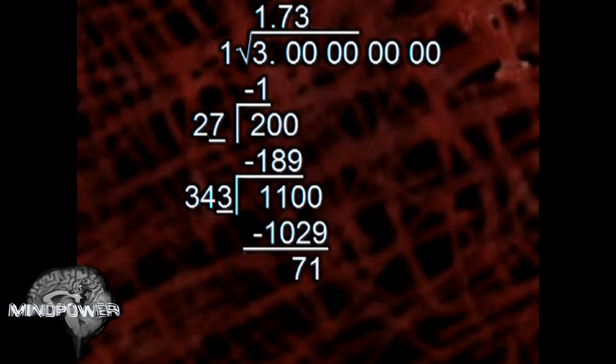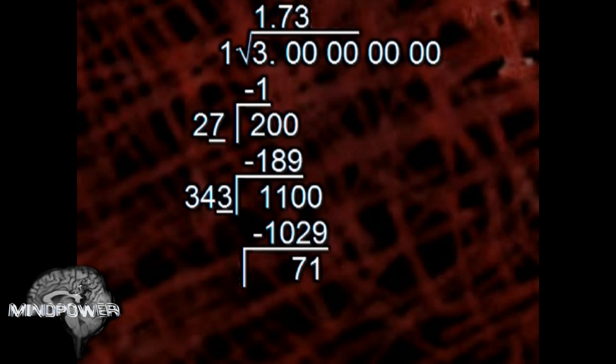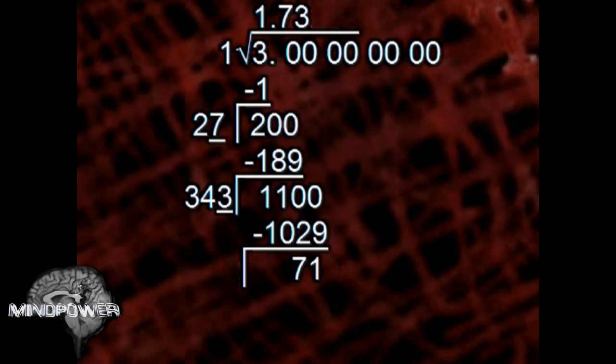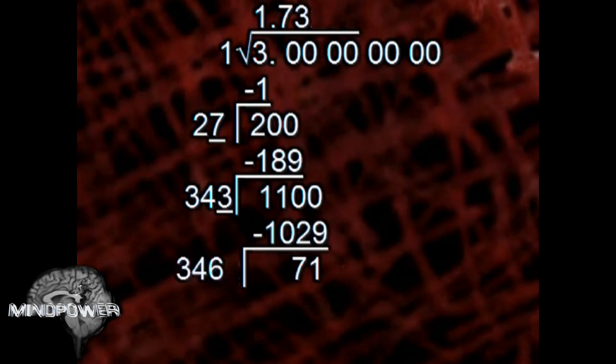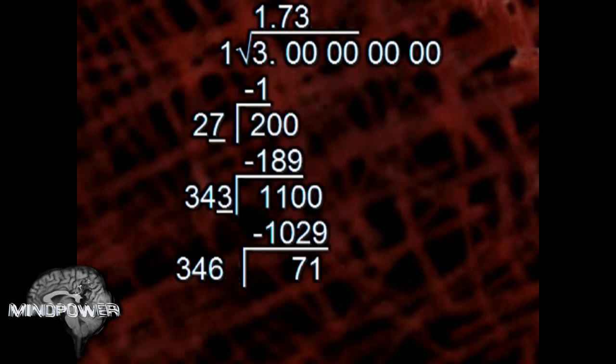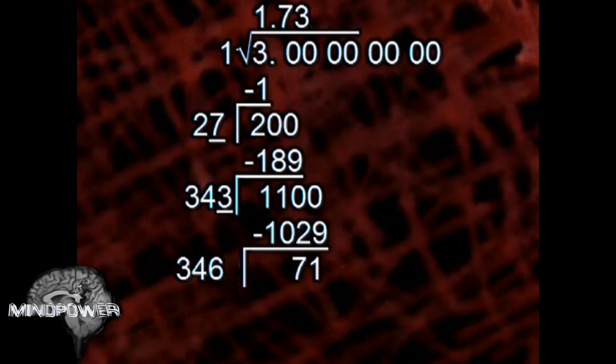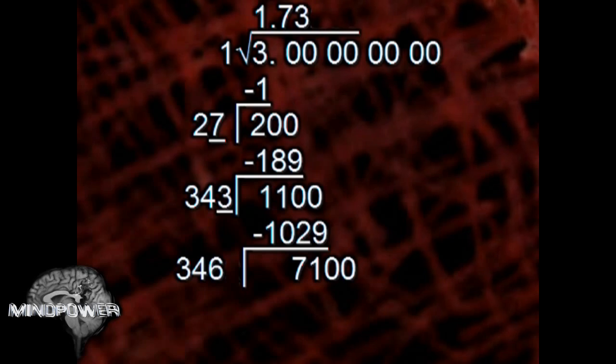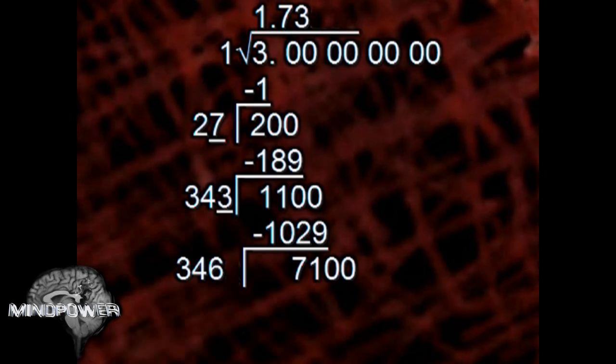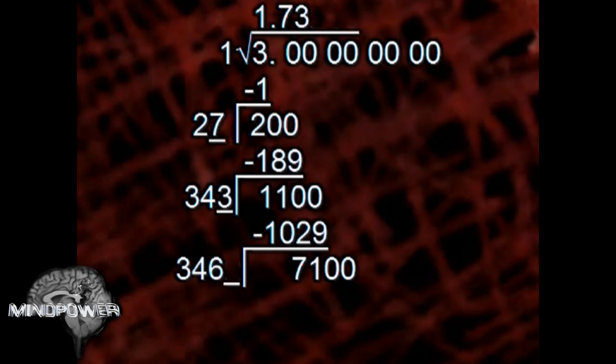Once again, we're going to need something to divide it by, so we multiply the last 3 in the 343 by 2. That makes 6, and we carry down the 34. So that makes it 346 again. We're going to drop down two of the zeros from above, and we need 346 to be 3460-something.